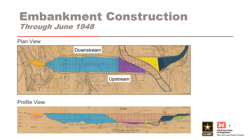Embankment construction through June 1948. Worcester Dam was authorized in 1938, but the notice to proceed for construction was not received until 1946, mostly due to World War II. Most of the embankment and outlet works were constructed over about two years, shown here in plan and profile. This shows the construction accomplished through June 1948.